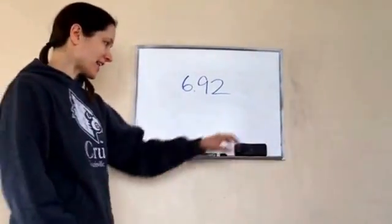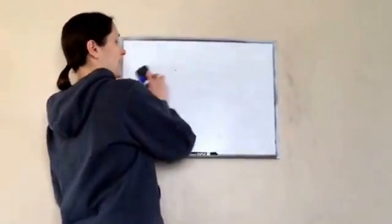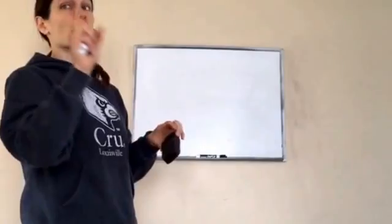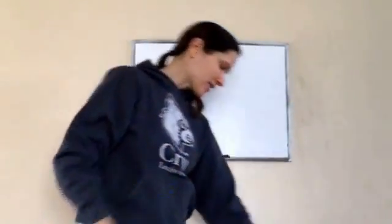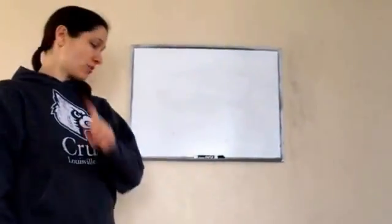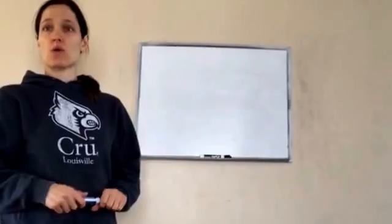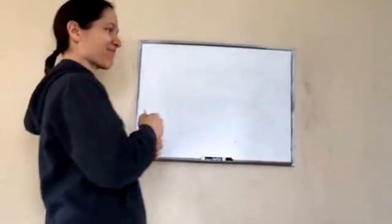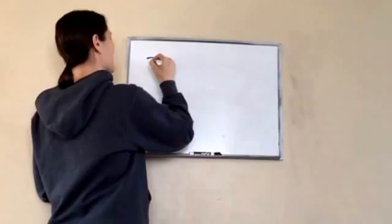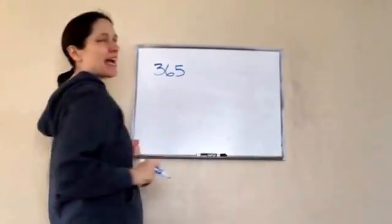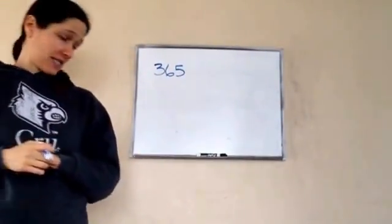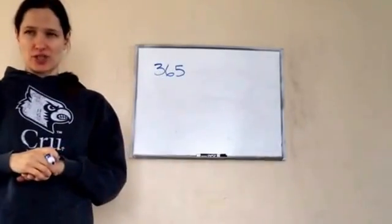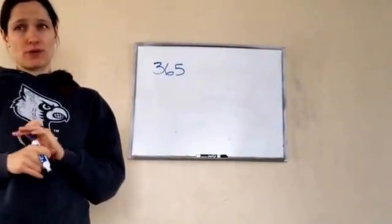Alright, 6th grade lesson 92. This is expanded notation with exponents and order of operations with exponents and then the power of fractions. Let's take the number 365. Help me remember how to write this in expanded notation. We haven't done it in a long time. Do you remember it?